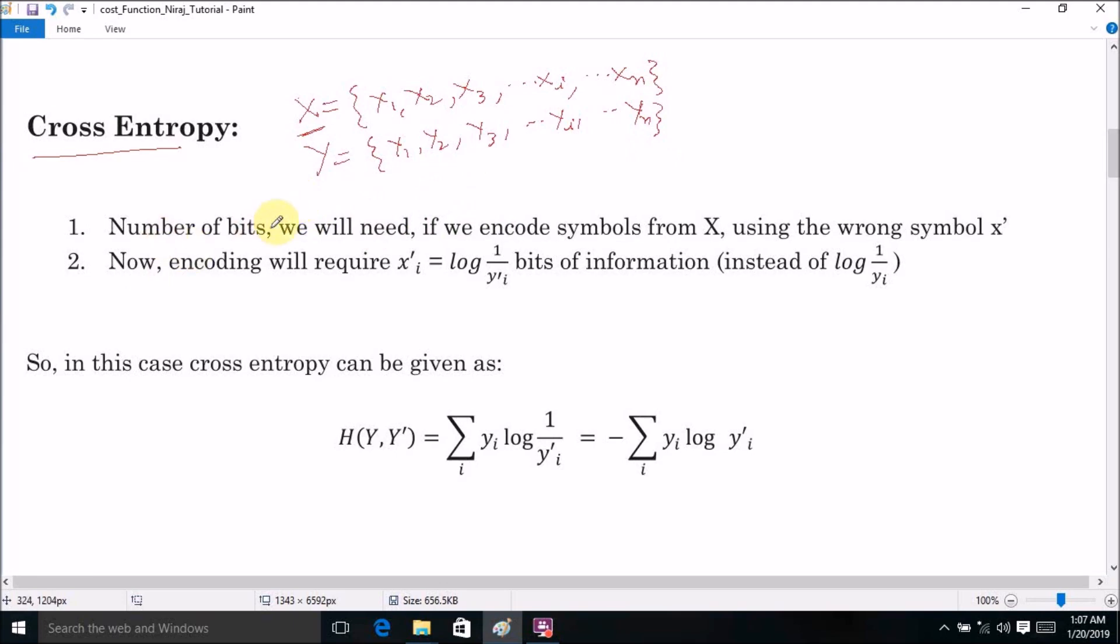And now, according to the concept of entropy, the minimum number of bits required to represent the ith symbol XI can be given as XI equals log of 1 divided by probability of XI or log of YI. Now suppose the number of bits that we will need if we encode the symbol of X by using a wrong symbol X'.